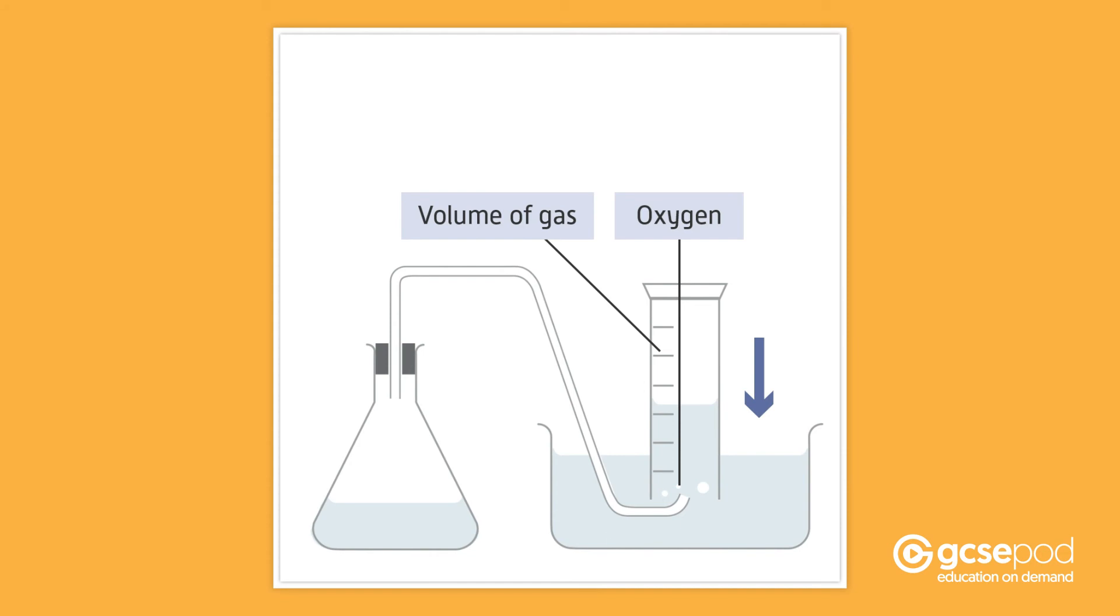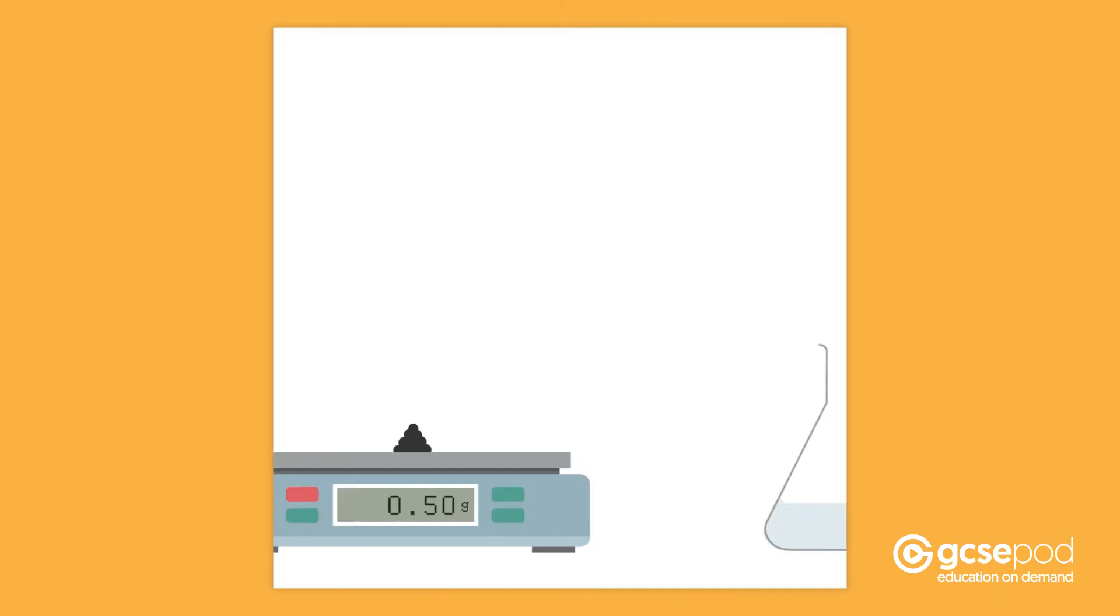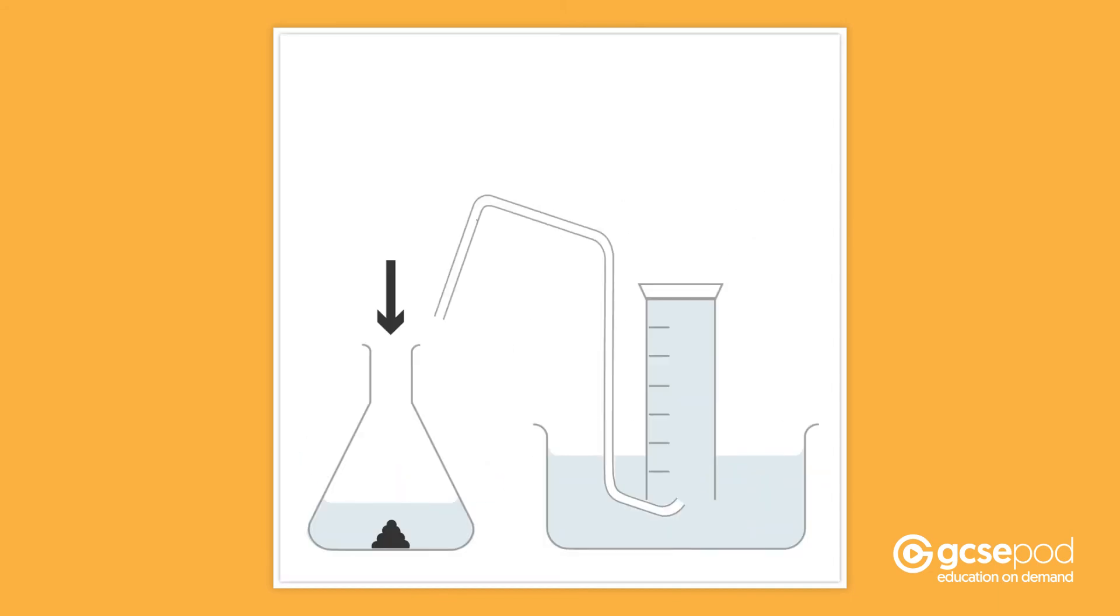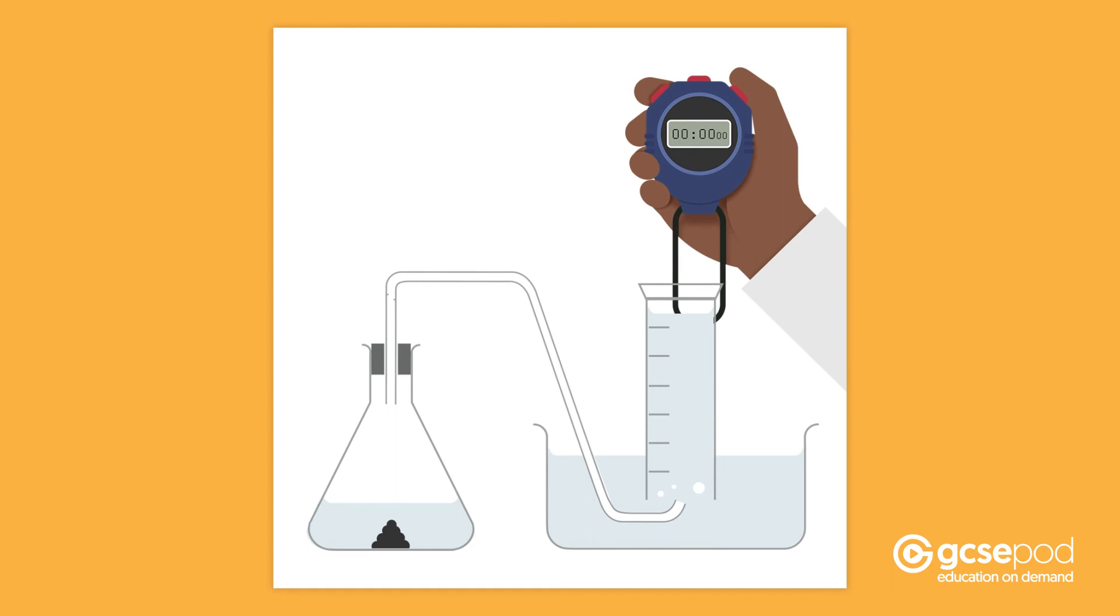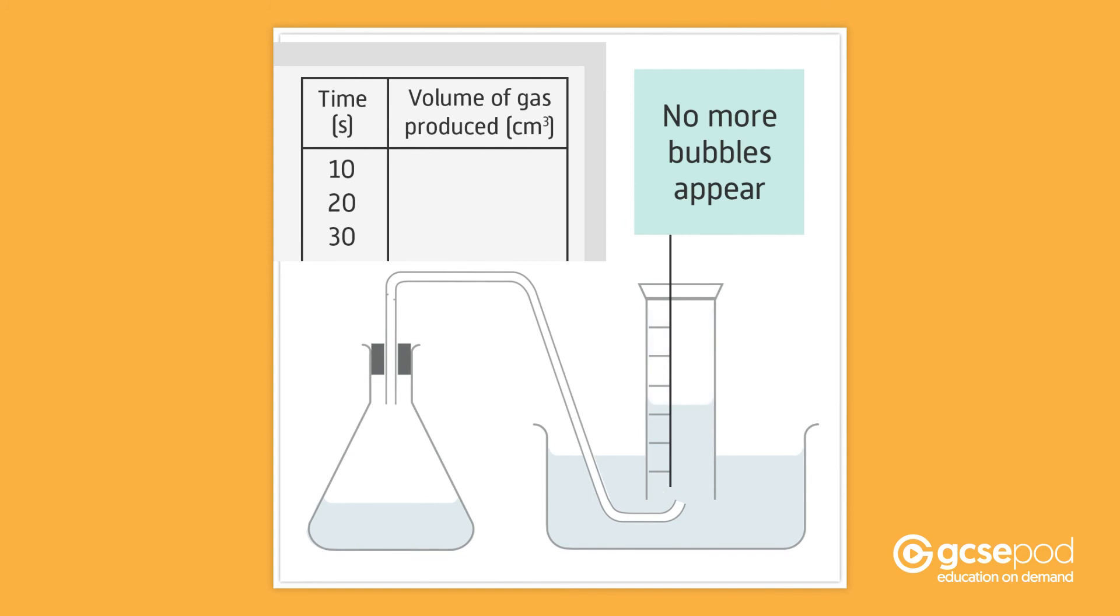Scales are used to measure out 0.5 grams of a catalyst. The catalyst is added to the conical flask and then a stopwatch is started. The volume of gas produced every 10 seconds is recorded in a suitable results table. You continue recording the volume until no more bubbles appear to be produced.